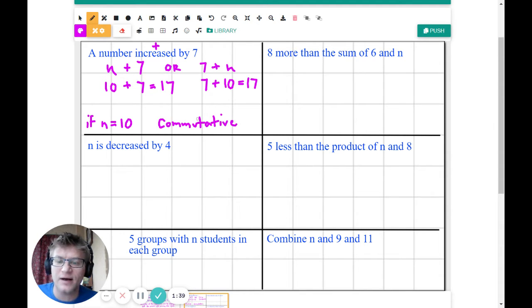Now let's try below that. If n is decreased by 4, we know that decreased usually means subtraction. So n is decreased by 4, we will say n minus 4 because it's being decreased. We start with n, n minus 4. Let's plug in. If n equals 10, we'll go 10 minus 4 equals 6. That makes sense.